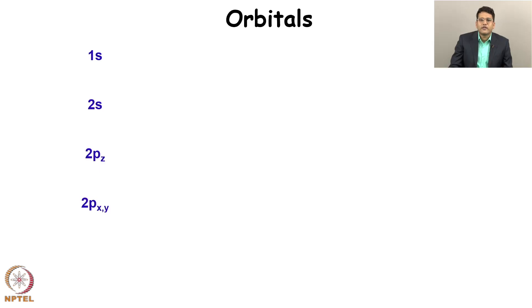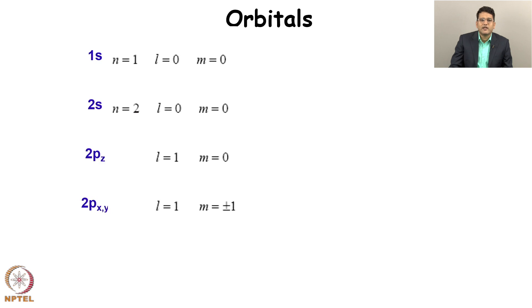When we solve the hydrogen atom, what we get are orbitals. These are the hydrogen atom energy levels: 1s, 2s, 2pz, 2px, 2py, 3s, 3p, and so on. Because the operator is a linear Hermitian operator, this gives a complete set, and because it is a complete set, we are going to use this to solve quantum mechanical problems numerically. This is what will construct my basis.